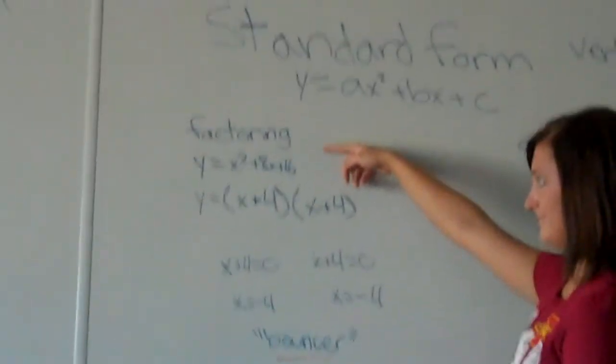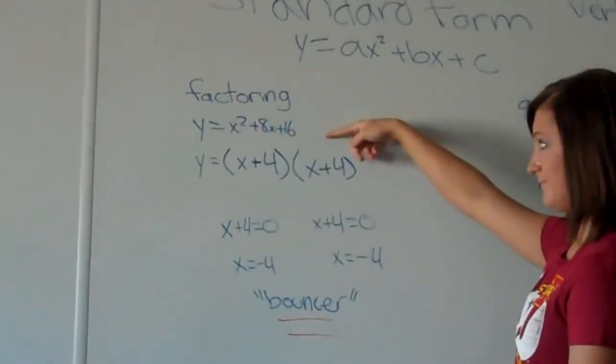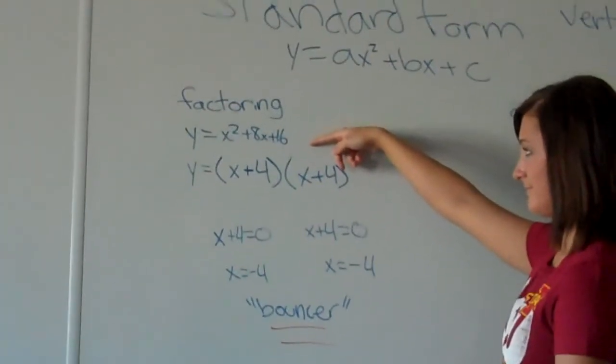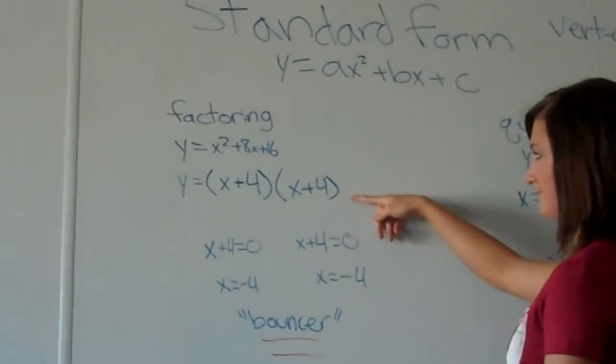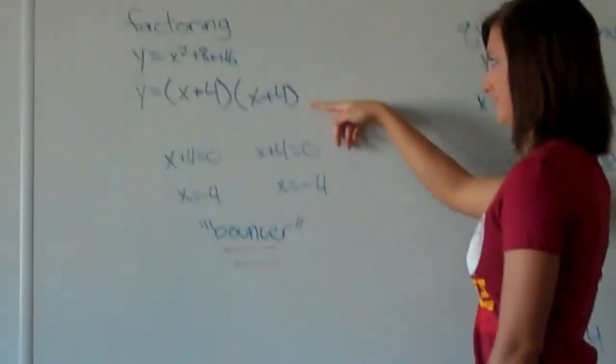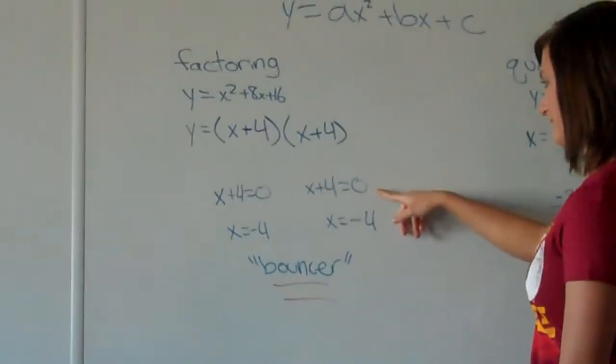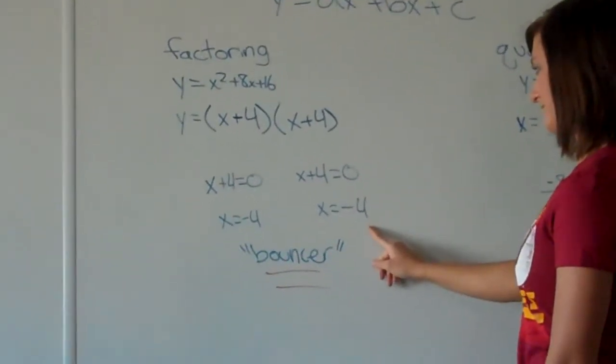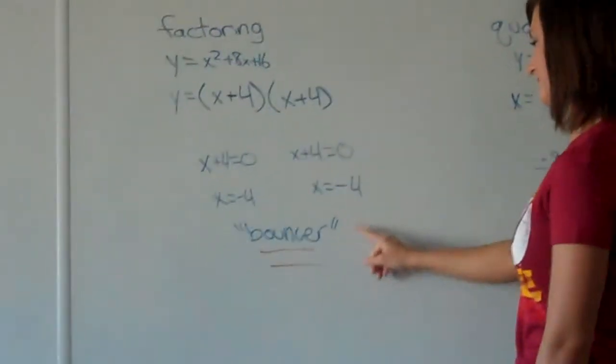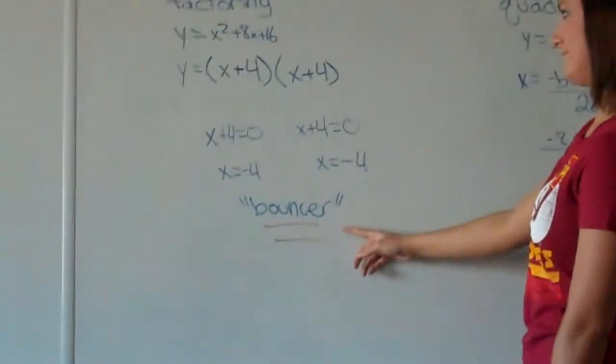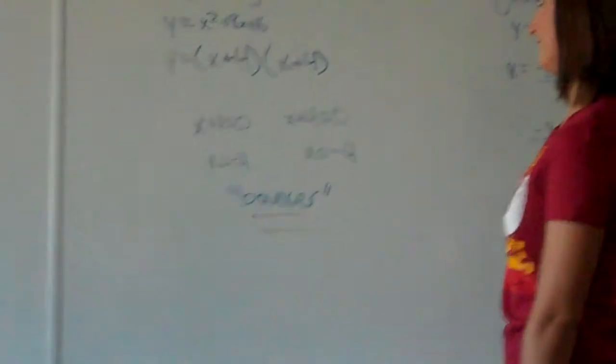You start out with your equation and then you break it down to x plus 4, x plus 4, and get x plus 4 equals 0, x plus 4 equals 0, and your answers are going to be negative 4 and negative 4. And this is considered a bouncer because it just touches the x-axis once.